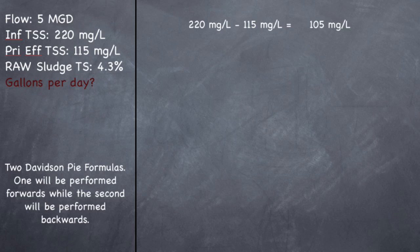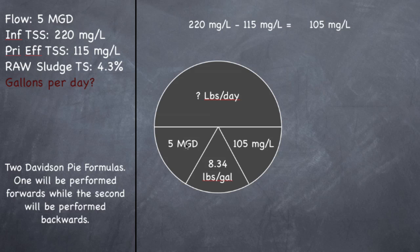So if I have a flow of 5 MGD times 8.34 pounds per gallon times 105 milligrams per liter should give you a pounds of 4,379 pounds per day. So that's how many pounds per day are settling out into my clarifier. But I need to figure out how many gallons per day are settling out into my clarifier.